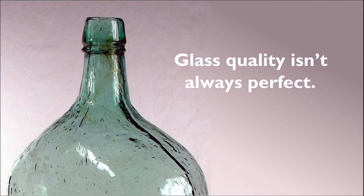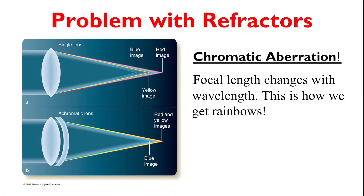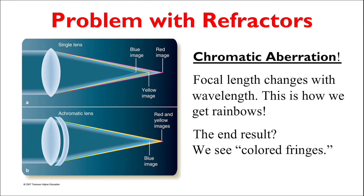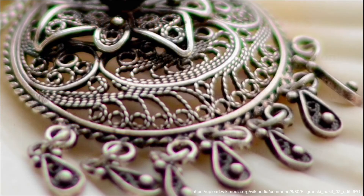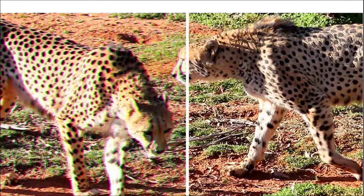The most prominent problem with refracting telescopes is chromatic aberration. As white light comes through the objective lens, its different colors bend at different angles, converging into separate images at different focal points. So we end up seeing colorful fringes around the edges of the objects being observed and photographed. For example, we see green fringes towards the top of this image of a pendant, while the bottom shows purple fringes. This side-by-side comparison shows a photograph of two cheetahs, but only one side has been corrected for the chromatic aberration that was originally there.